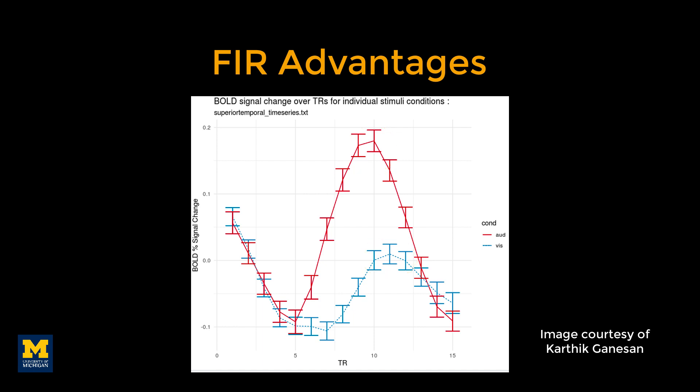But that is not all. With a finite impulse response analysis, we can see that the rise in the BOLD response occurs earlier for the auditory stimuli than it does for the visual stimuli. This more subtle difference between the conditions would be missed if we used a fixed, stereotyped response function for the BOLD signal.